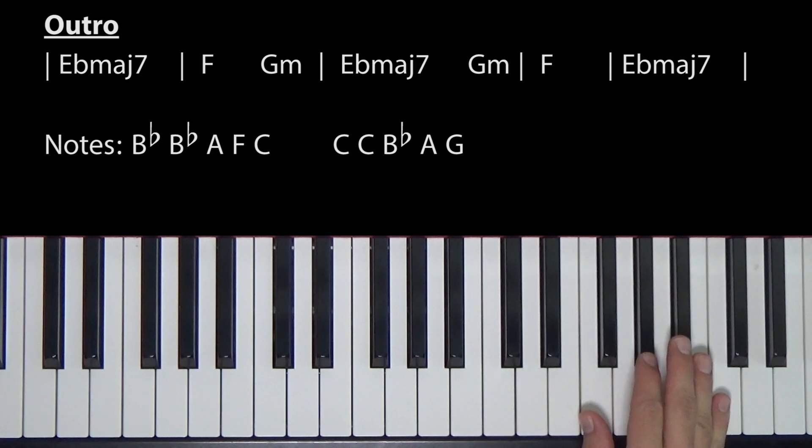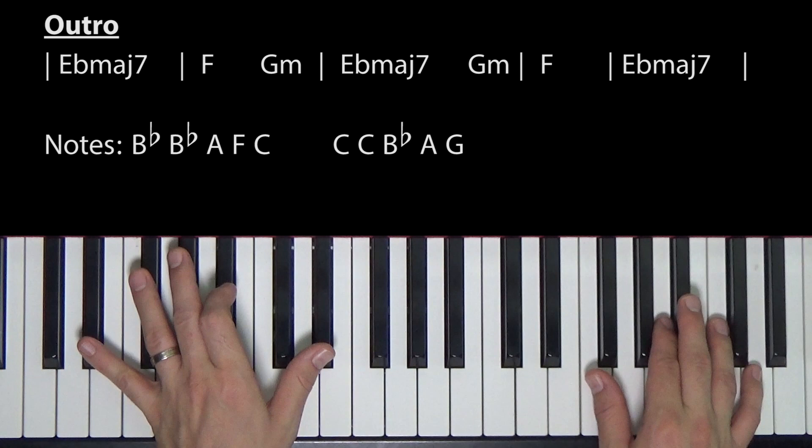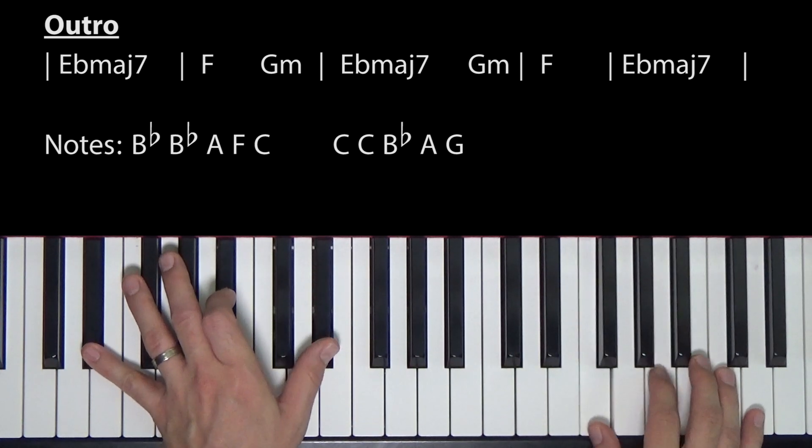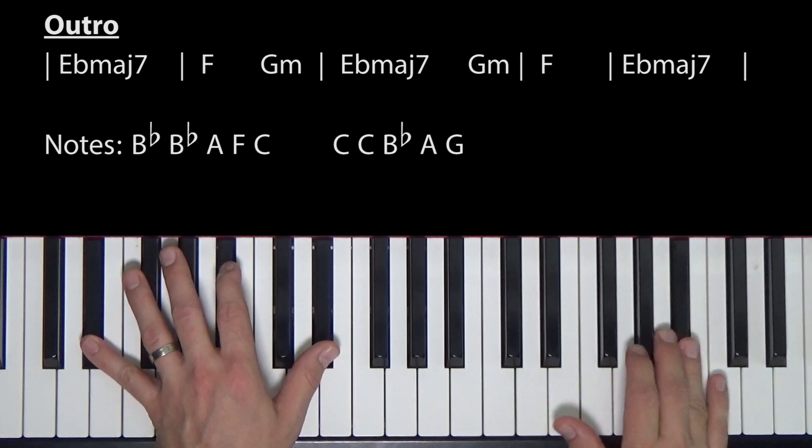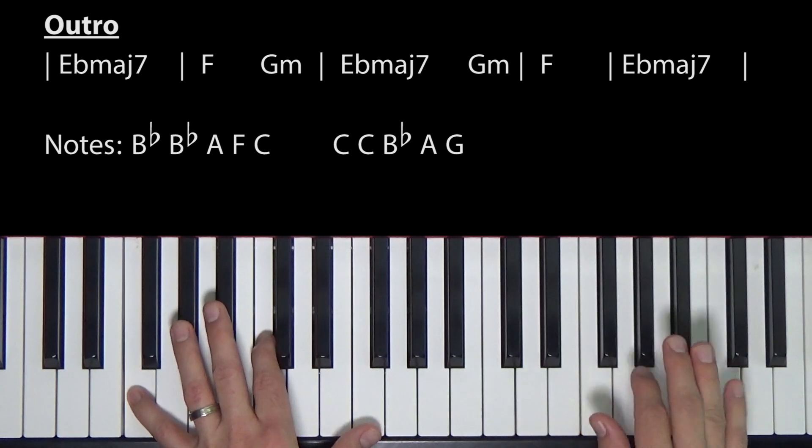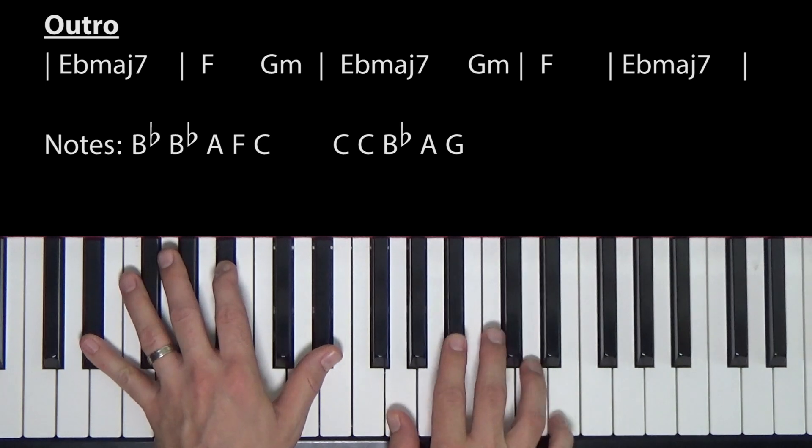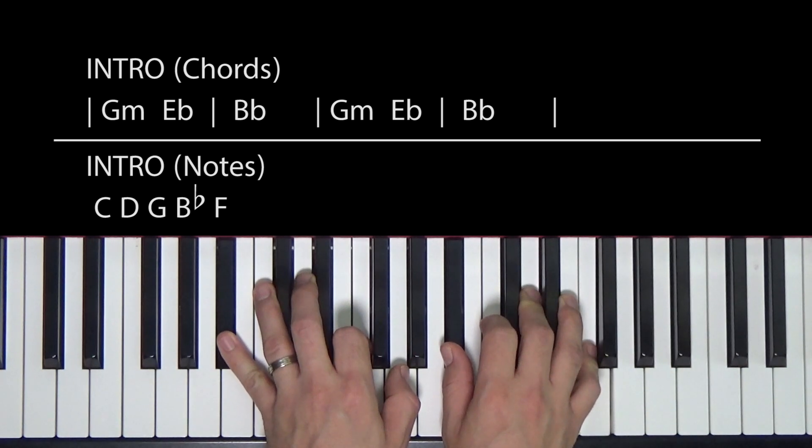All right. One last thing. And then we will be done with this. We'll be singing and playing through this whole song so you can practice. So at the end, they do one more little thing. It's B flat, B flat, A, F, C. Then C, C, B flat, A, G. So here's how it'll sound in time. One, two, three, four. All right. I know that was a lot. This isn't the easiest song. So just take your time. Work through it. You can just, you know, if you can put the time in, these things will come together.